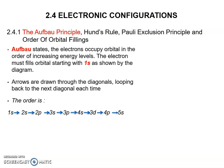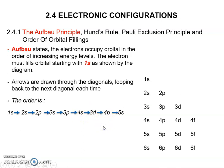The electrons occupy orbitals in the order of increasing energy levels. The electron must fill orbitals starting with 1s, as shown by the diagram. Arrows are drawn through the diagonals and looping back to the next diagonal each time. The order of the Aufbau principle is: 1s, 2s, 2p, 3s, 3p, 4s, followed by 3d, then 4p, and 5s.